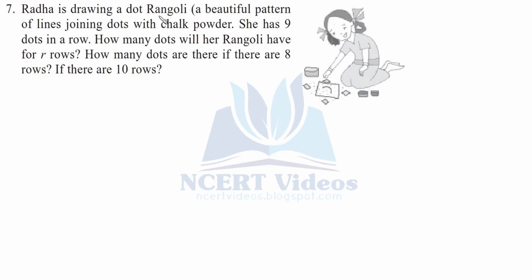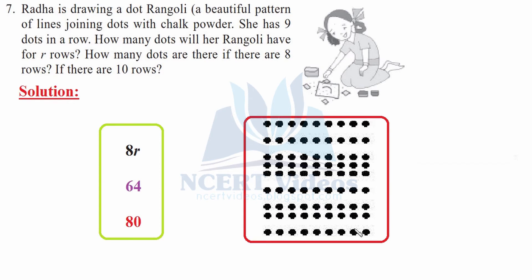Question 7: Radha is joining a dot rangoli, a beautiful pattern, joining dots with lines. She has 9 dots in a row. How many dots will her rangoli have for R rows? How many dots are there if there are 8 rows, if there are 10 rows? This is the kind of pattern she makes and it contains 9 dots. Similarly, another row will contain 9 and the rest follow. You have to find how many dots will her rangoli have for R rows. You have to make the general formula for that with the help of a variable.